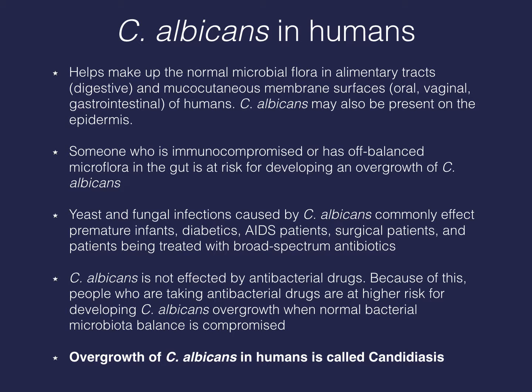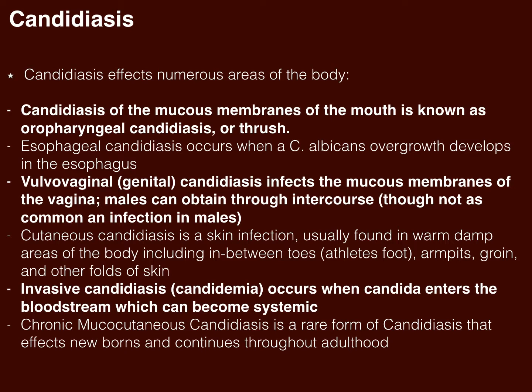Overgrowth of Candida albicans in humans is called Candidiasis, which affects numerous areas of the body. Candidiasis of the mucous membranes of the mouth is known as oropharyngeal candidiasis, or thrush. Esophageal candidiasis occurs when overgrowth develops in the esophagus. Vulvovaginal candidiasis, or a vaginal yeast infection, infects the mucous membranes of the vagina. Males can obtain this through intercourse, though it is less common in males.